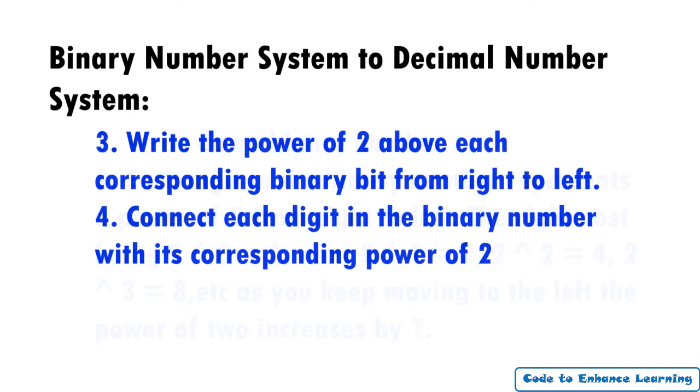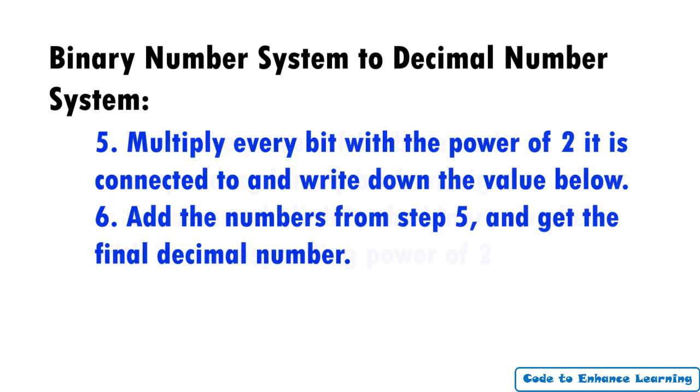Step 4: Connect each digit in the binary number with its corresponding power of 2. Step 5: Multiply every bit with the power of 2 it is connected to and write down the value below. Step 6: Add the numbers from step 5 and get the final decimal number.